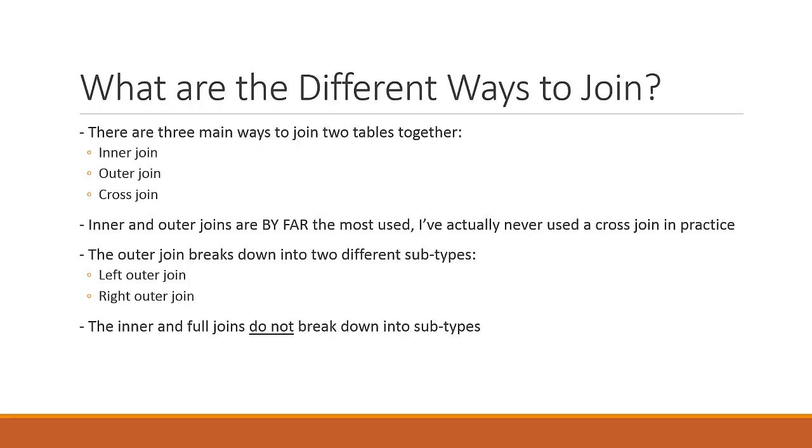So what are the different ways to actually join tables together? Well, there's three main ways to join two tables together. You can even get to the point where you're joining multiple tables together - table A with table B, C, D, E, F, G, whatever. But typically in the cases that we're talking about now, we're just going to be talking about joining two tables together. However, it is completely normal to join more than two tables together. So just know that it's perfectly fine if you're joining two or more tables together. But in any case, there are three main ways to join tables together, which is the inner join, the outer join, and the cross join.